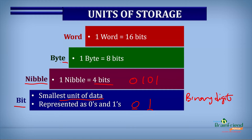Next, we have the byte. The byte is made up of eight bits. So when you think of a byte, think of any alphabet or any number — for instance, A. It means A is made up of eight zeros and ones. That's why a byte is equal to eight bits. Consider another alphabet or number, like two or seven — each one is considered a byte and is made up of eight bits.